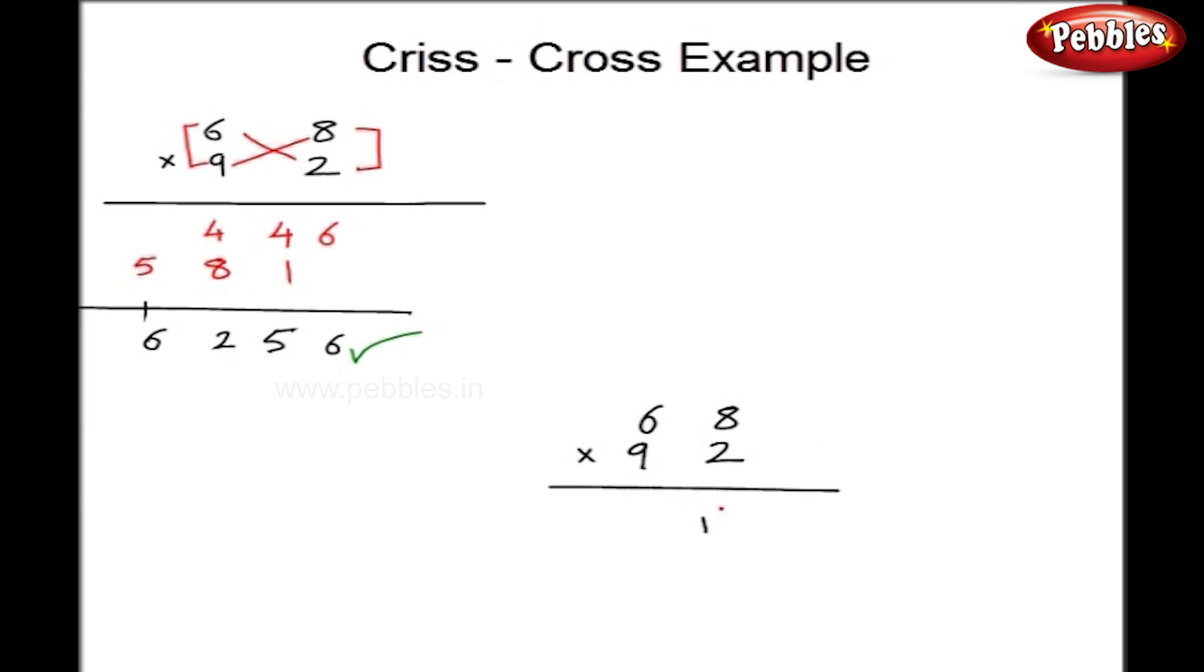I am taking the same example. So, I get 1, 6. Then cross multiplication and addition. So, I got 84 and the multiplication of last column 54. This implies, I get my final answer as 6, 5, 12. So, I write 2 and 6. So, I get my answer in just 2 steps.